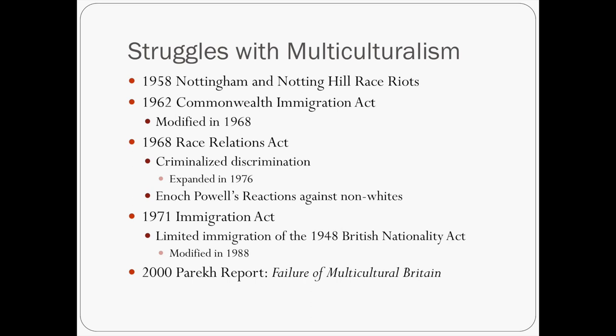In 1968, the Race Relations Act made discrimination against the law. Enoch Powell, a British member of Parliament, said that there would be rivers of blood and thought that discrimination was a good thing — the Conservative Party essentially fired him. But many in England did believe this and were discriminatory toward non-whites, echoing Powell's concerns. In 1971, there was an Immigration Act which constricted the Nationality Act, modified again in 1988. All of this resulted in problems of the empire coming home, and in 2000 the Parekh Report illustrated the failure of multicultural Britain and the difficulties of integration.